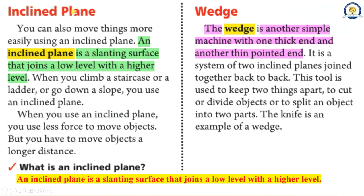Inclined plane. You can also move things more easily using an inclined plane. An inclined plane is a slanting surface that joins a low level with a higher level. When you climb a staircase or a ladder or go down a slope, you use an inclined plane. When you use an inclined plane, you use less force to move objects, but you have to move objects a longer distance.